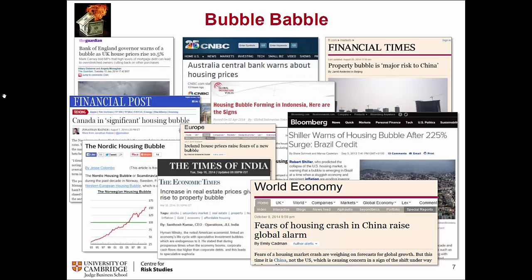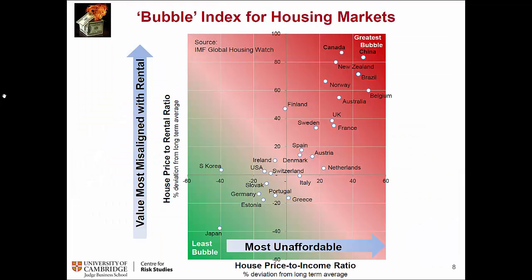There is a lot of news about different fears of housing market crashes in China, Brazil, and Indonesia. If we look at indicators such as house price-to-income ratio or house price-to-rental ratio and map different countries on it, we can see quite a lot of countries in the bubble — especially those at the top right corner: China, Brazil, and somewhat lower, the UK.